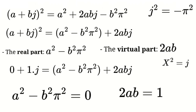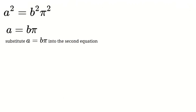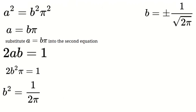Now let's solve these equations step by step. From the first equation, a² equals b²·π². Taking the square root on both sides, we get a equals b·π. We choose the positive root for simplicity. Next, substituting a = b·π into the second equation gives us 2·b·π·b equals 1. Simplifying, we get 2b²·π equals 1. Solving for b², we get b² equals 1 divided by 2π. Taking the square root, b equals ±1/√(2π).